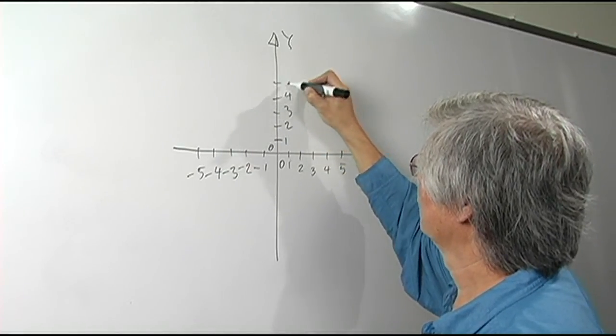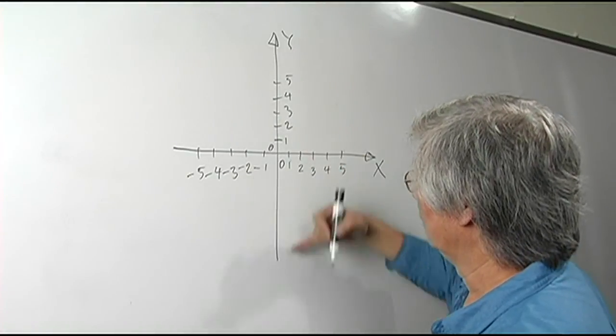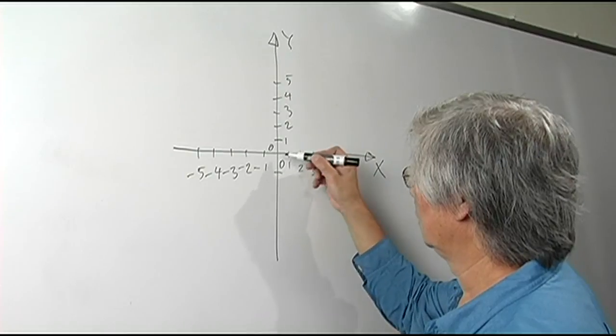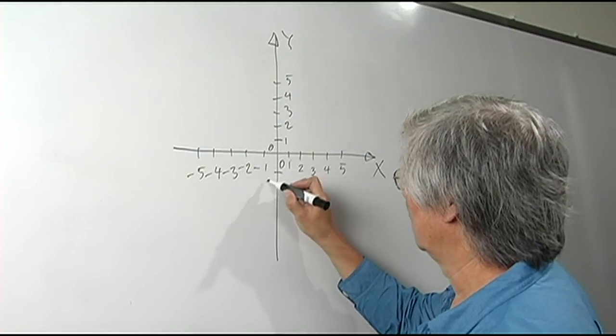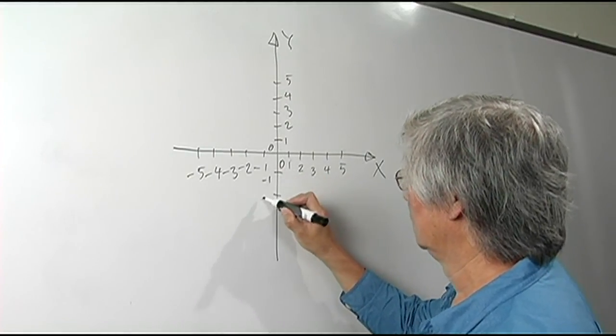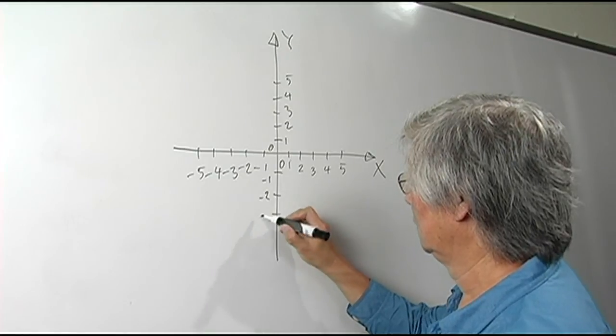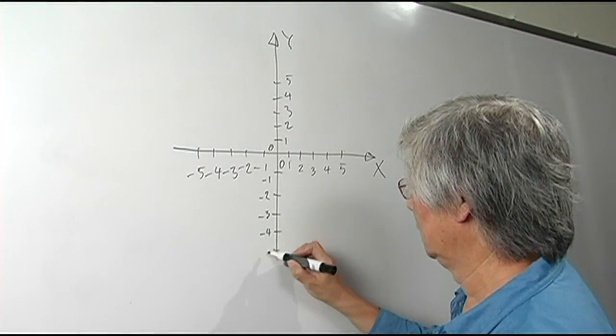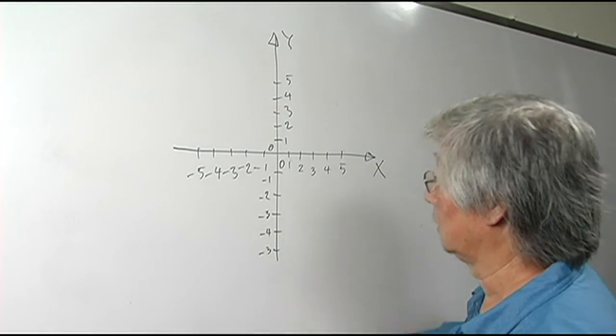Going in the negative direction below the origin we have negative one, negative two, negative three, negative four, negative five. This can go on forever.